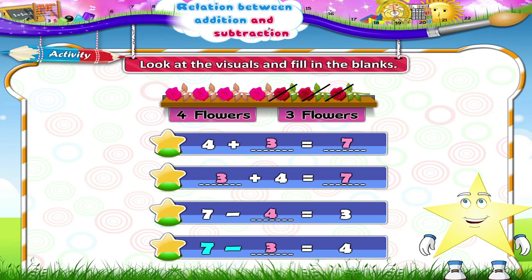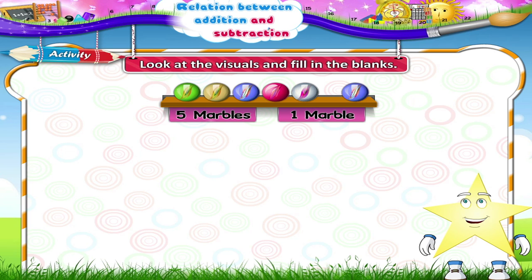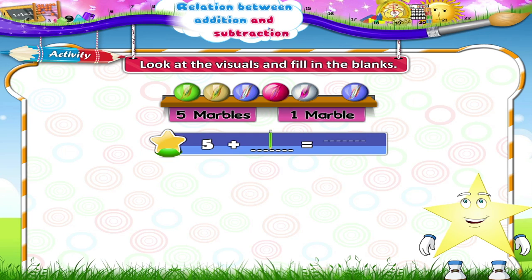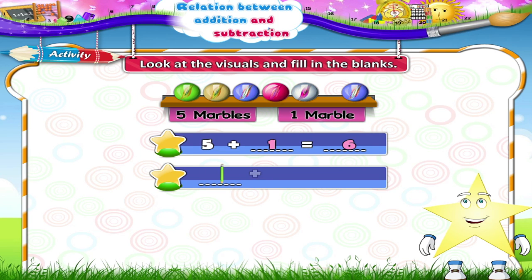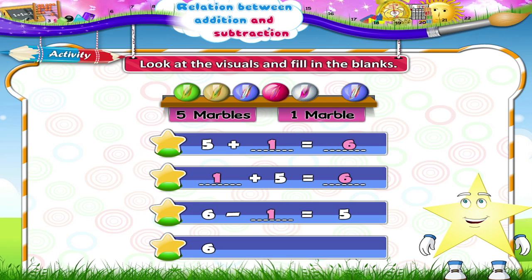7 minus blank equals 4. 7 minus 3 equals 4. 5 marbles and 1 marble. 5 plus blank equals blank. 5 plus 1 equals 6. 1 plus 5 equals 6. 6 minus blank equals 5. 6 minus 1 equals 5. 6 minus 5 equals 1.